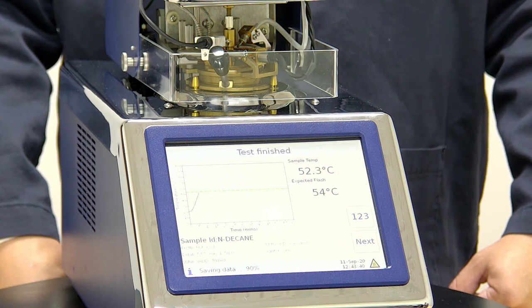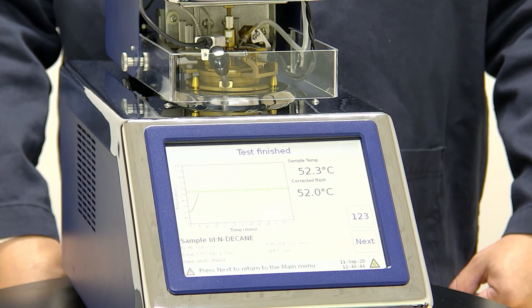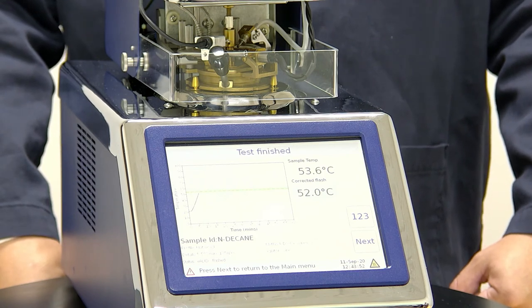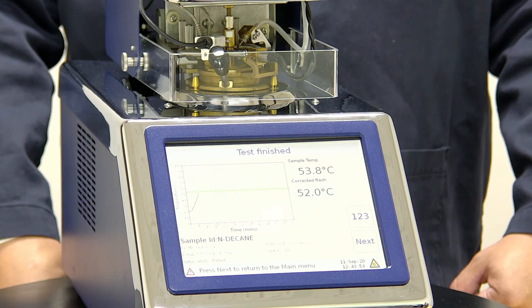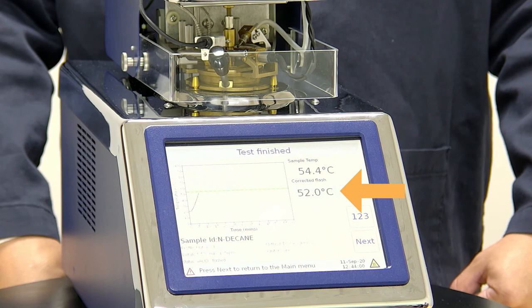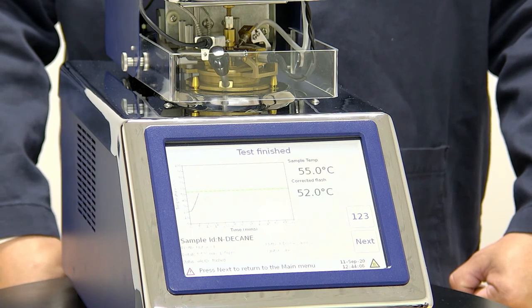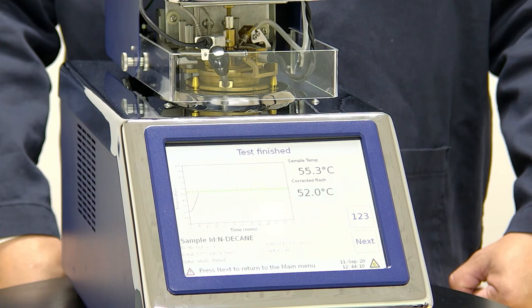We've hit our flashpoint and you'll hear the instrument. It makes a very distinctive sound which is selectable from one of six different sounds. We have our corrected flashpoint on the bottom along with our current sample temp. As you can see, our corrected flashpoint was 52.0 degrees which is within range of the procedure A for N-Decane which would be 53.8 plus or minus 2.6.